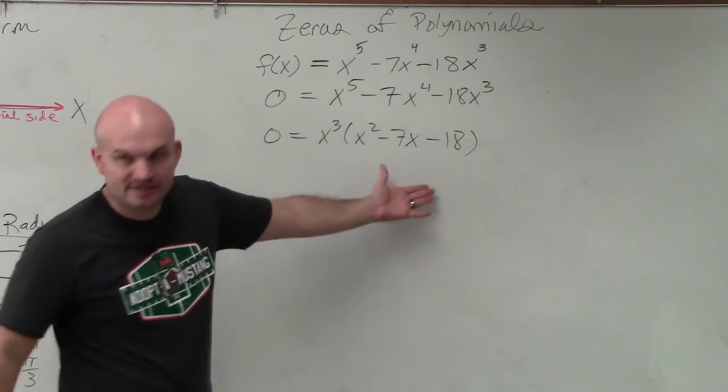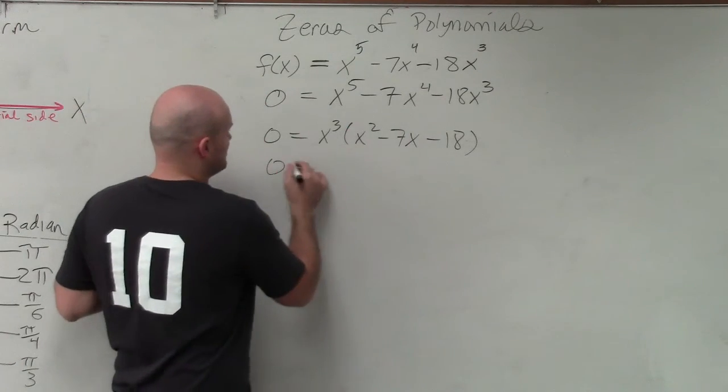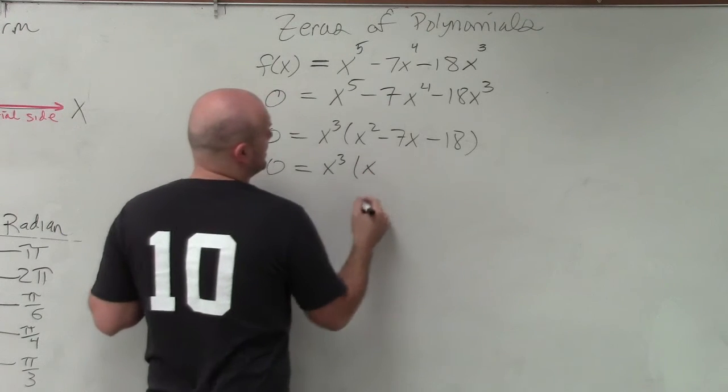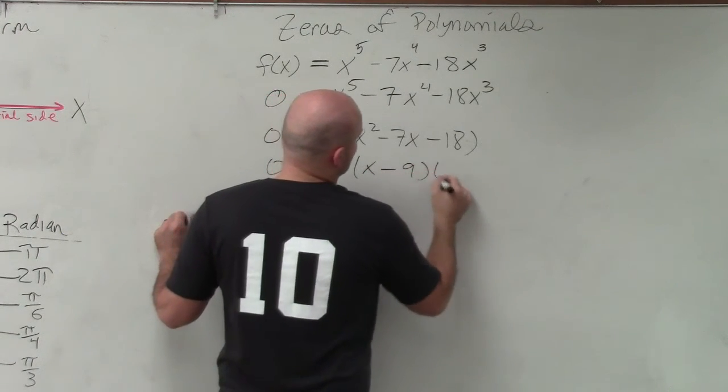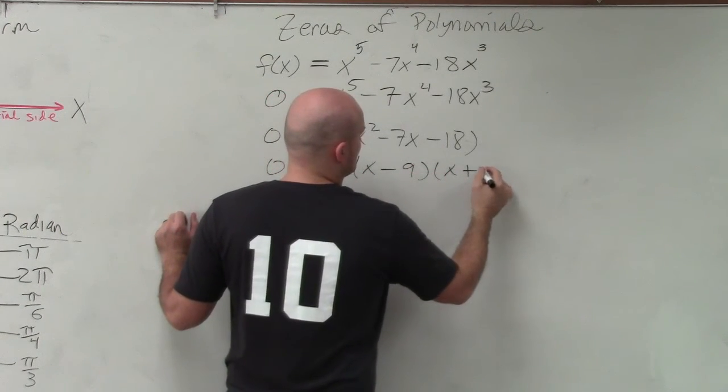Well, we've already explained this factoring technique multiple times today. So that's x cubed times x minus 9 times x plus 2.